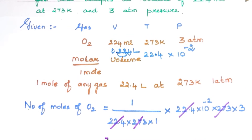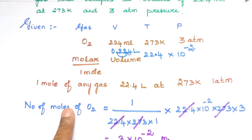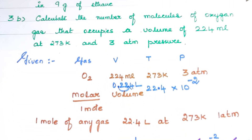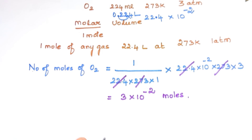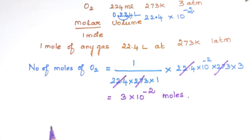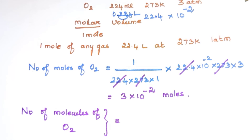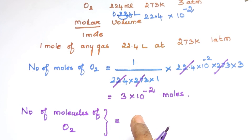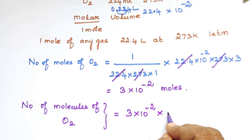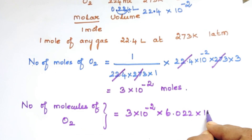The number of moles of oxygen = (22.4 × 10⁻² L) / (22.4 L/mol), with 22.4 cancelling and 273 cancelling, giving 3 × 10⁻² moles. Since the question asks for number of molecules, we multiply the number of moles by Avogadro's number: 3 × 10⁻² × 6.022 × 10²³.